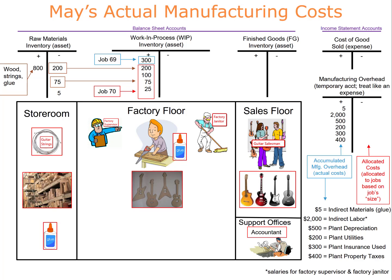How do we decide how much manufacturing overhead is assigned to a job? The bigger the job, the more overhead costs are allocated to it. For a labor-intensive product like guitars, a company will likely use the number of direct labor hours or the total cost of direct labor to determine how much overhead is assigned. If the product is machine-intensive — mostly built by machines and robots — then machine hours would likely be used instead.